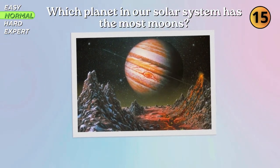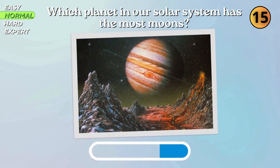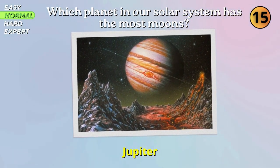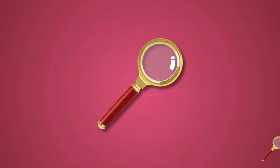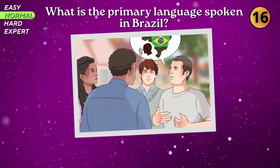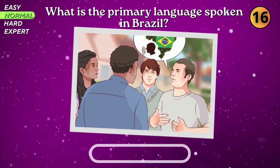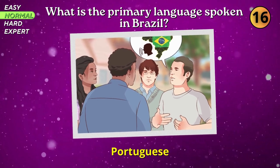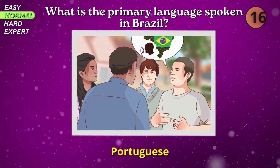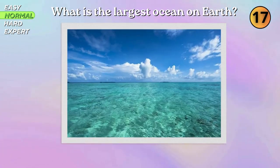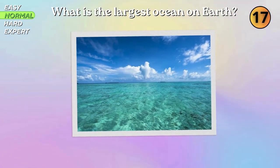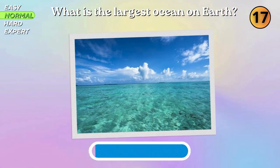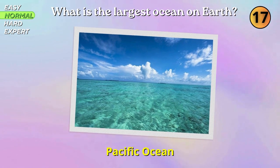Which planet in our solar system has the most moons? Jupiter. What is the primary language spoken in Brazil? Portuguese. What is the largest ocean on Earth? Pacific Ocean.